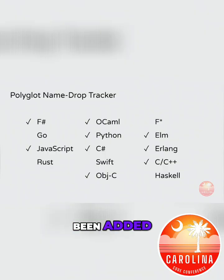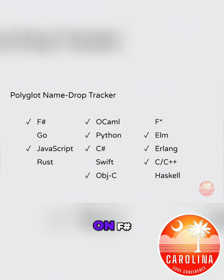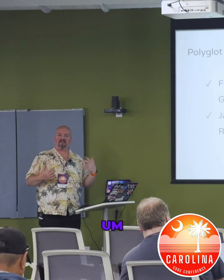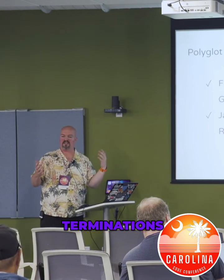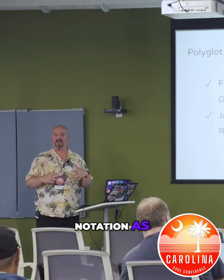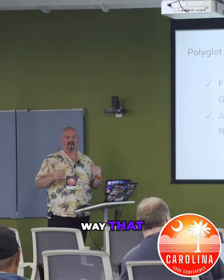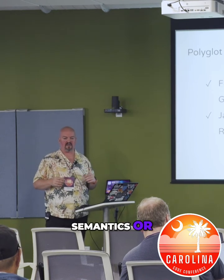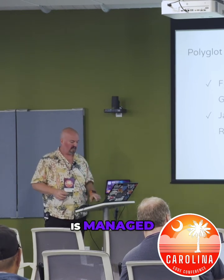Python has now been added because there are two influences from Python on F-sharp. One was very early, where F-sharp departed from OCaml by getting rid of line terminations and using indentation as scope — as a way to manage the syntax within the app.